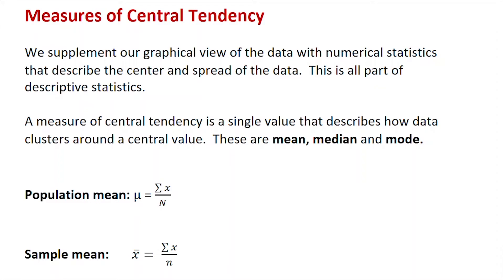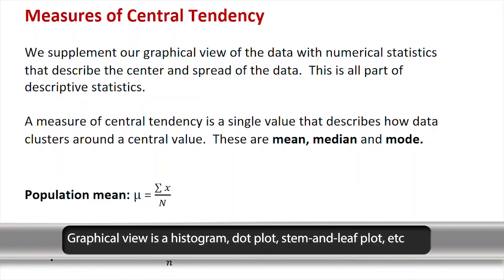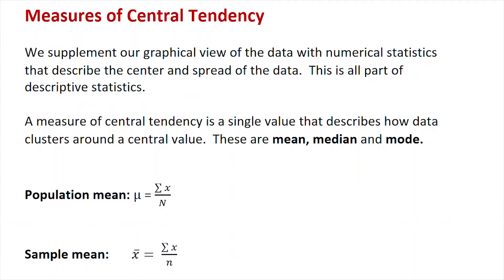We're going to start with measures of central tendency, the mean. After we've got our graphical view of our data, we supplement that view with numerical statistics that describe the center and the spread of the data. All of this - the graphical view, the measures of central tendency, and the descriptions of the spread - are descriptive statistics. Measures of central tendency is a single value that describes how data clusters around a central value, and the measures of central tendency are the mean, the median, and the mode.